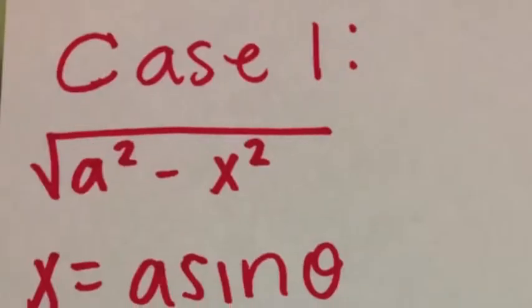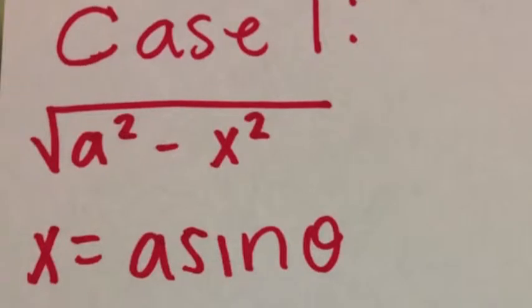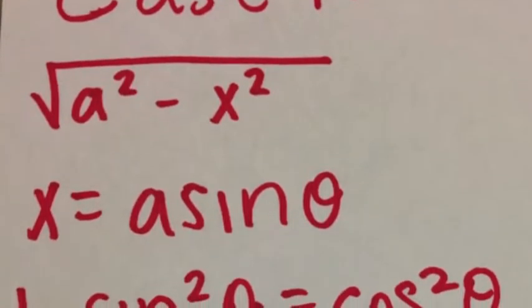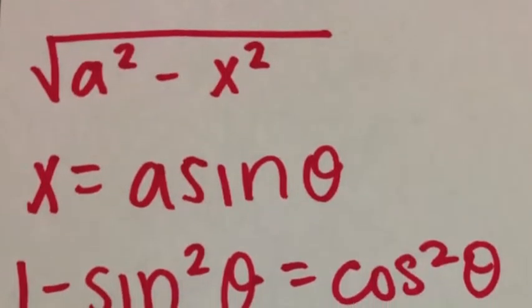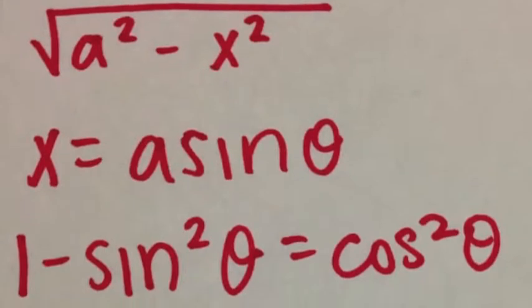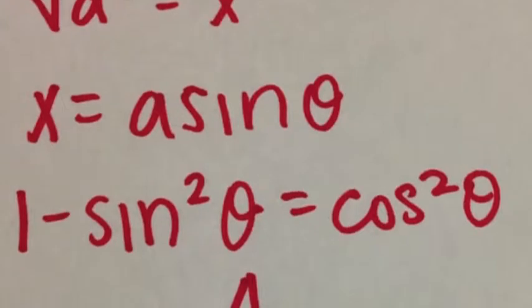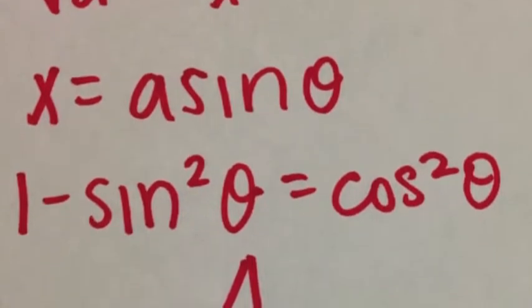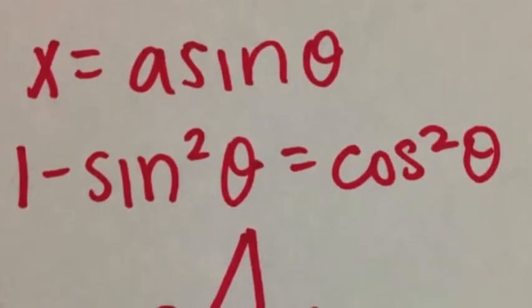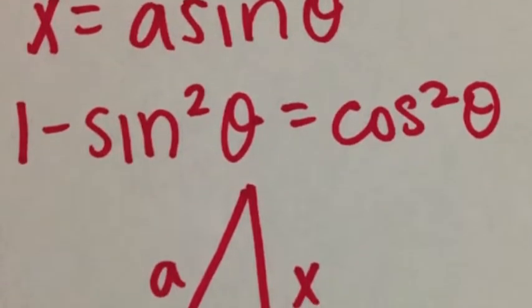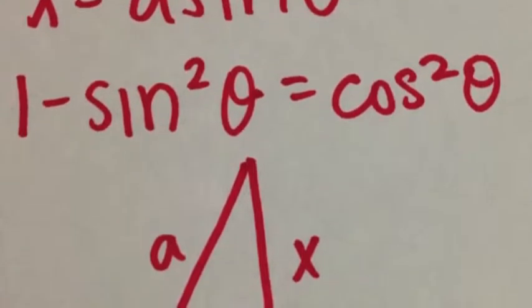It's actually pretty simple, and there are only three cases in which we can use trigonometric substitution. In Case 1, you have the radical of an integer being squared subtracted from a variable being squared. In this situation, we're going to plug in a sine theta for x, but remember, a is being squared in your radical, so you have to take the square root of a before plugging in for x. To refresh your memory: 1 minus sine squared theta equals cosine squared theta.